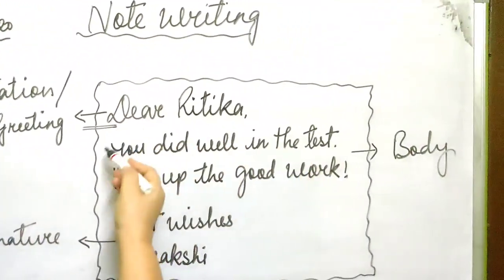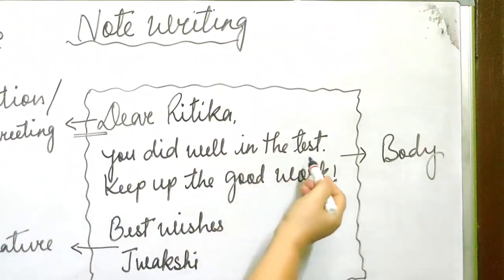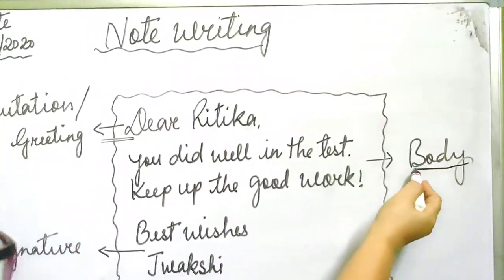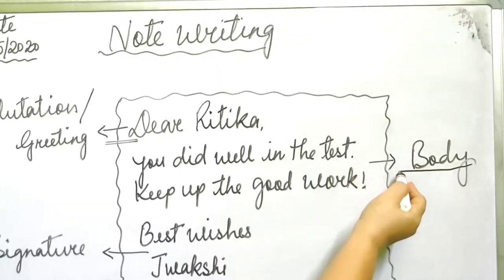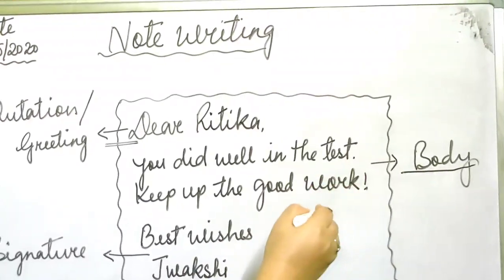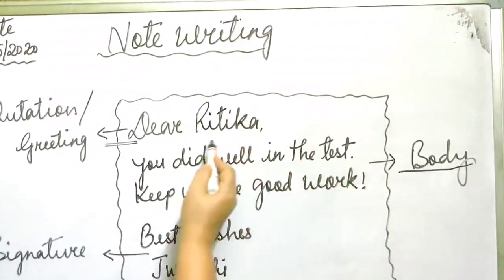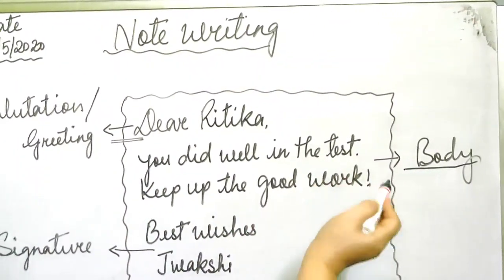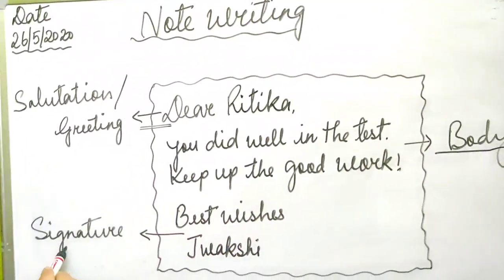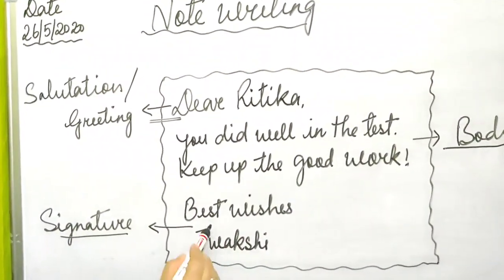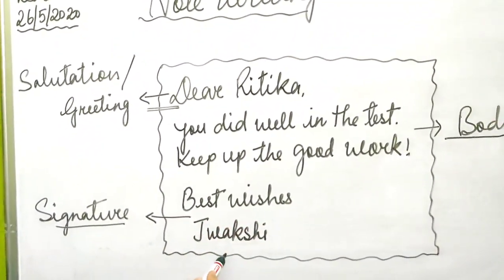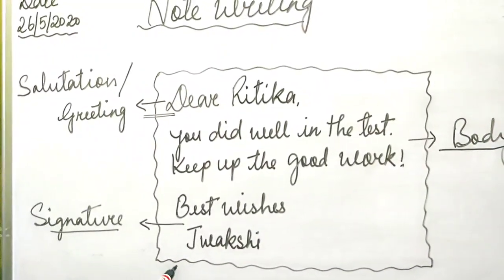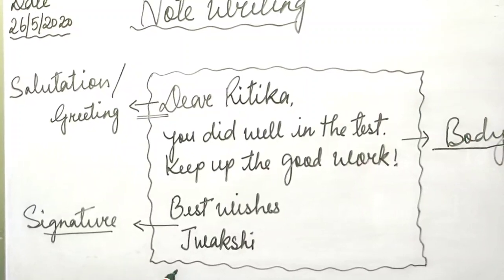Then the body: 'You did well in the test. Keep up the good work.' This is the body — write only the main idea that you want to convey. Only the main idea you have to write in this message. Then the signature: 'Best wishes, Jyokshi.'